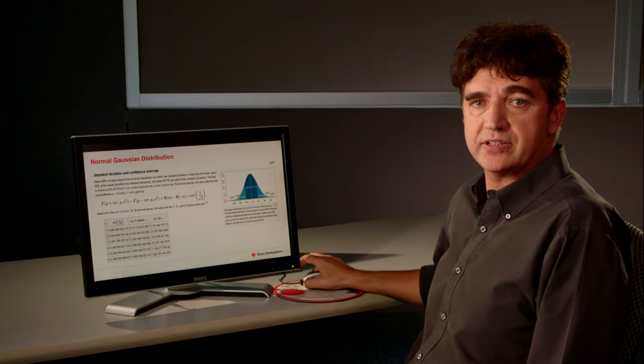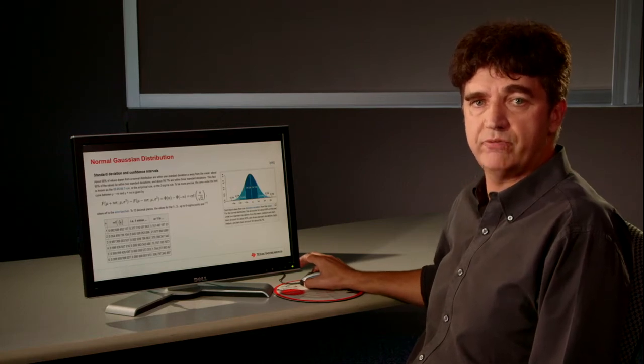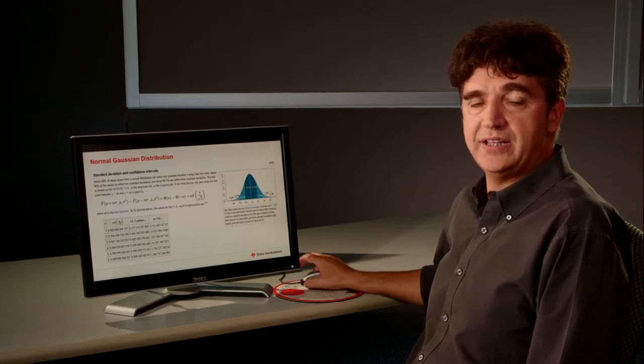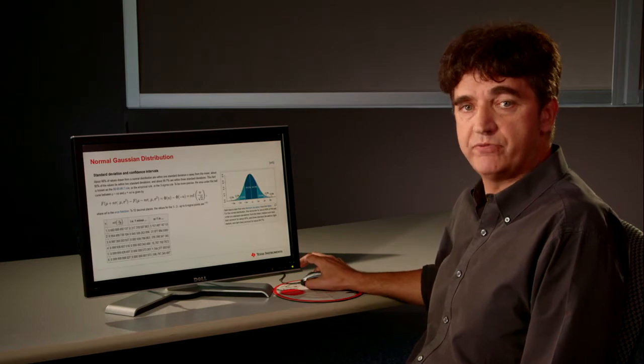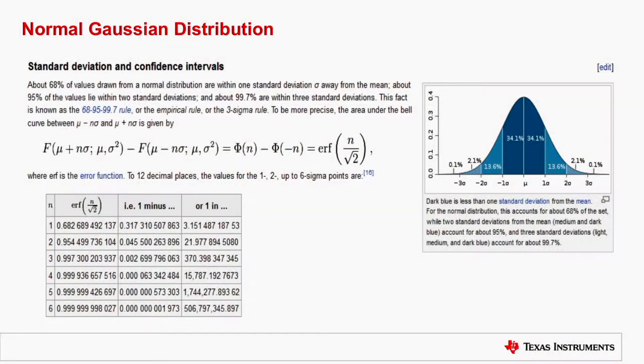Before I get into the details how various parameters change over the product life, I'd like to refresh the information about the normal Gaussian distribution.